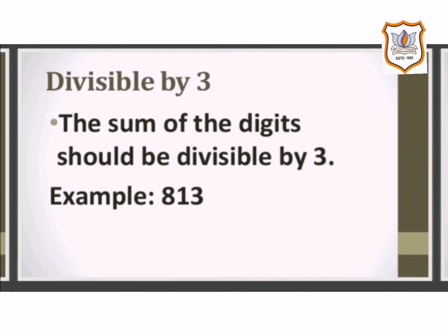The second rule is divisible by 3. If the sum of the digits of a number is a multiple of 3, then the given number is divisible by 3. For example, 813: if we add 8 plus 1 plus 3, we get 12, which is divisible by 3. So 813 is also divisible by 3.